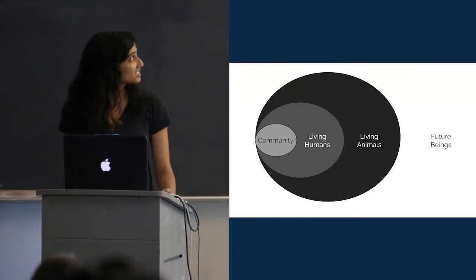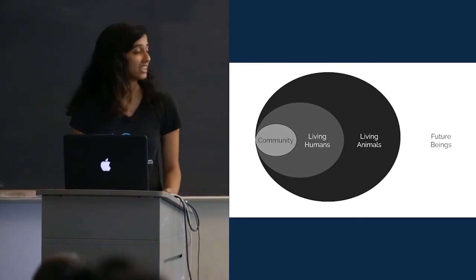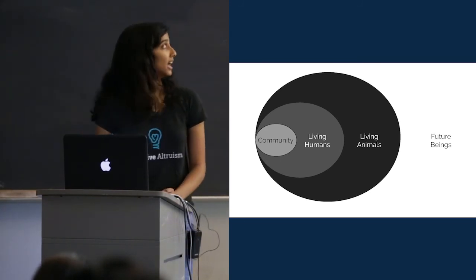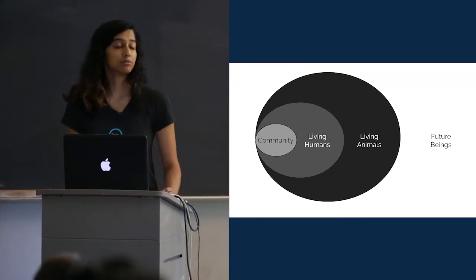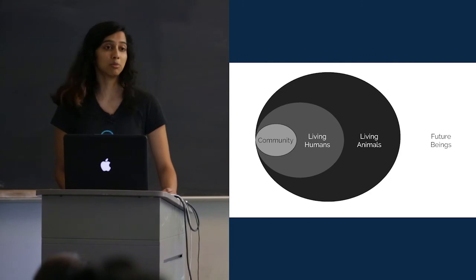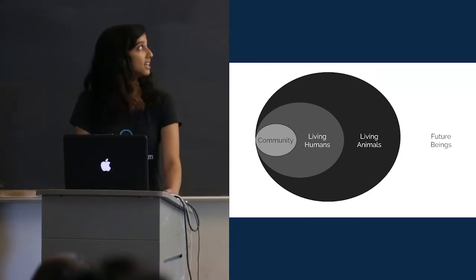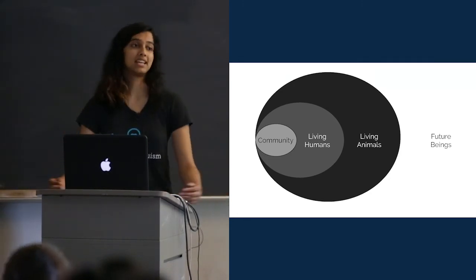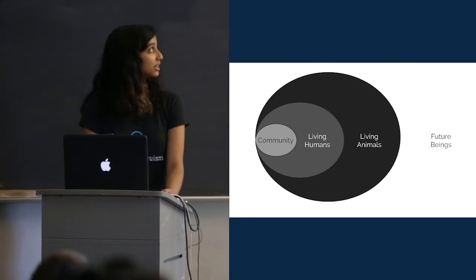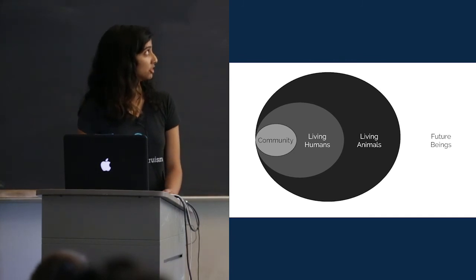Those of us who have reflected on it and think that we do care have often gone vegetarian or vegan. And many effective altruists support reducing factory farming for the same reasons that others support ending global poverty. Because when we let all of these animals, tens of billions, into the circle of things that we care about, then a lot of human concerns get pushed aside out of sheer numbers, out of the sheer suffering that most of these animals endured.